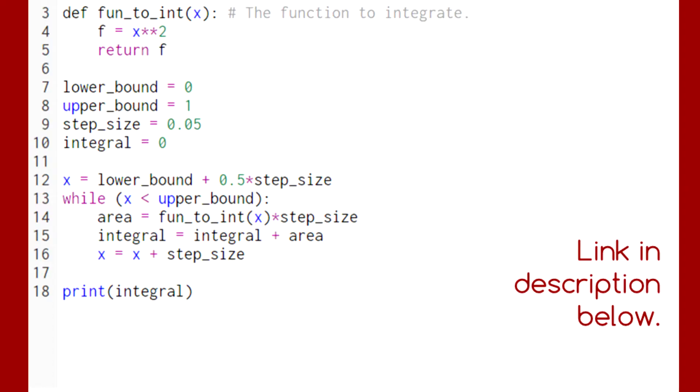In this code, which is available in a link in the description below, we're integrating x squared, which should give us a value of one-third when integrated from zero to one.